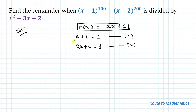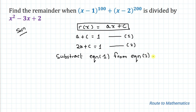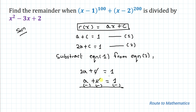So here are our two equations: equation 1 is a plus c equals 1, and equation 2 is 2a plus c equals 1. Let's subtract equation 1 from equation 2. The c terms cancel out. 1 minus 1 is 0, and 2a minus a is a. So we have a equals 0.